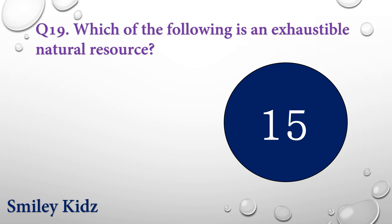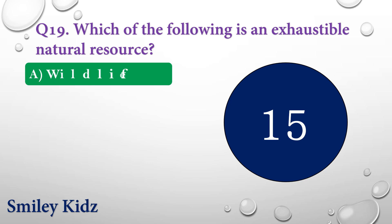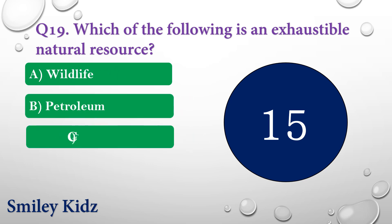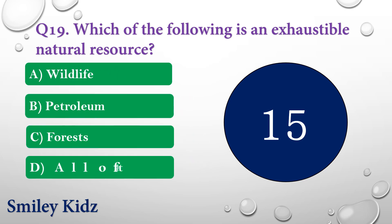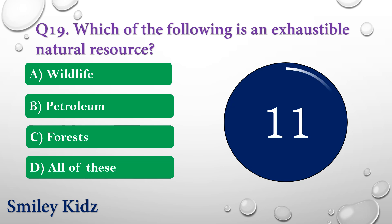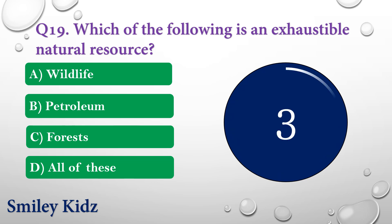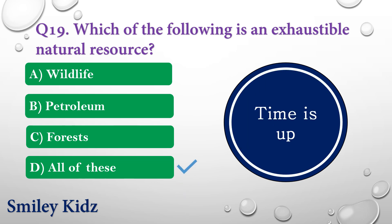Question number nineteen: Which of the following is an exhaustible natural resource? The options are: A) Wildlife, B) Petroleum, C) Forest, or D) All of these. Your time is up and the right answer is option D — All of these. Wildlife, petroleum, and forest are exhaustible natural resources.